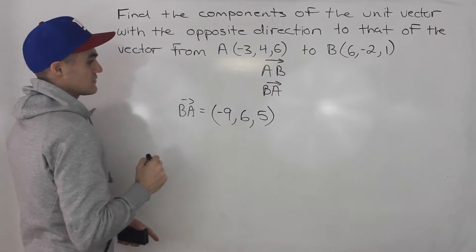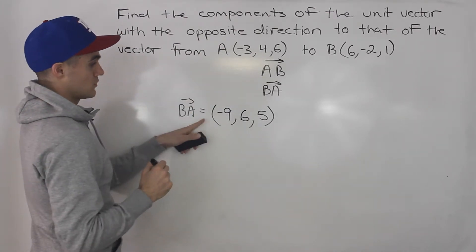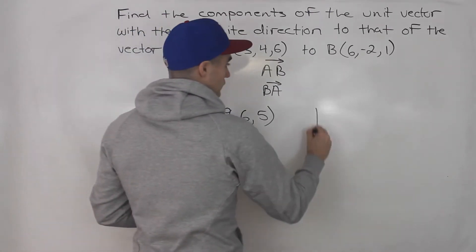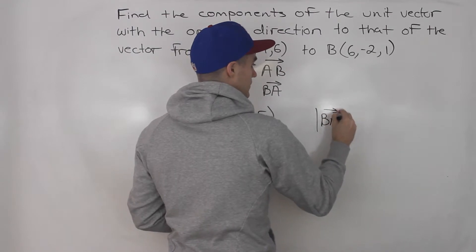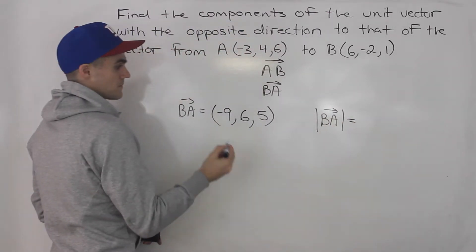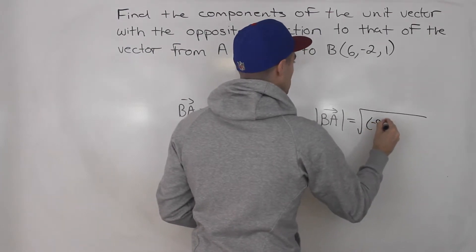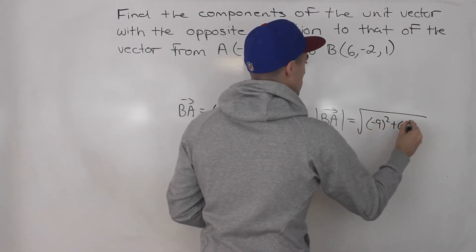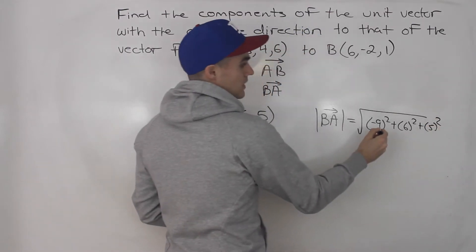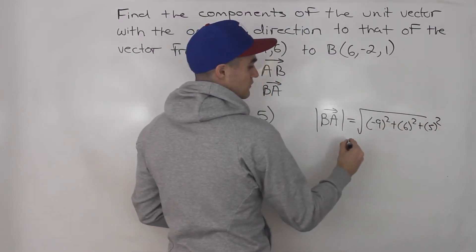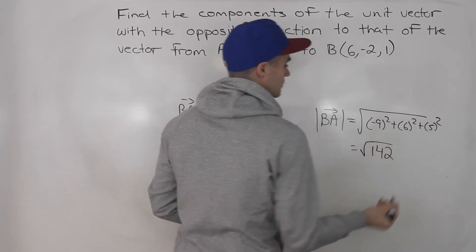But we need to find the components of the unit vector, so we have to find the magnitude of this vector first. The magnitude would be the square root of negative 9 squared plus 6 squared plus 5 squared — that's 81 plus 36 plus 25, which gives us 142. So the magnitude is the square root of 142.